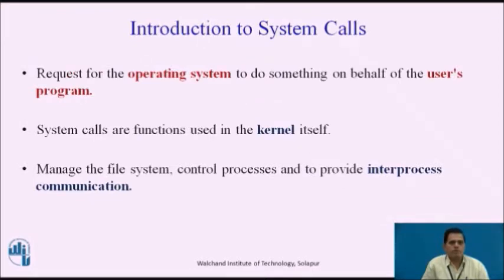A system call is a request for the operating system to do something on behalf of the user's program. System calls are functions used in the kernel itself. To the programmer, the system call appears as a normal C function call. However, since the system call executes code in the kernel, Unix system calls are used to manage the file system, control processes, and to provide inter-process communication.